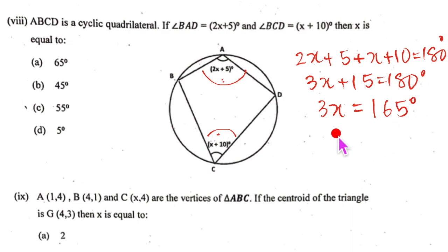So 3x will be equal to 180 minus 10 that is 170 and subtract 5. So x is equal to 165 degrees. So x is going to be equal to 165 upon 3. So 3 will go 5 times 15 remain 1 again 5 times. So our x is equal to 55 degrees which is option C.